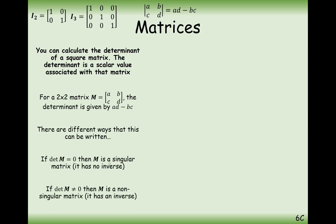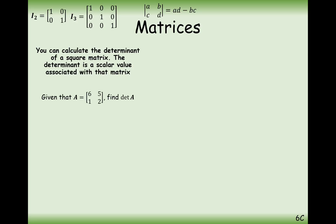A little bit of terminology. When your determinant is 0, the matrix has no inverse, and we call it a singular matrix. If the determinant is not equal to 0, it's non-singular — in other words, it has an inverse. We'll look at where inverse and non-inverse matrices arise later on.